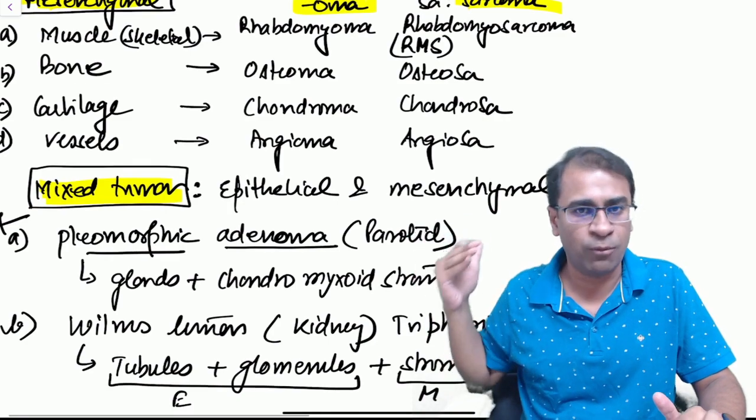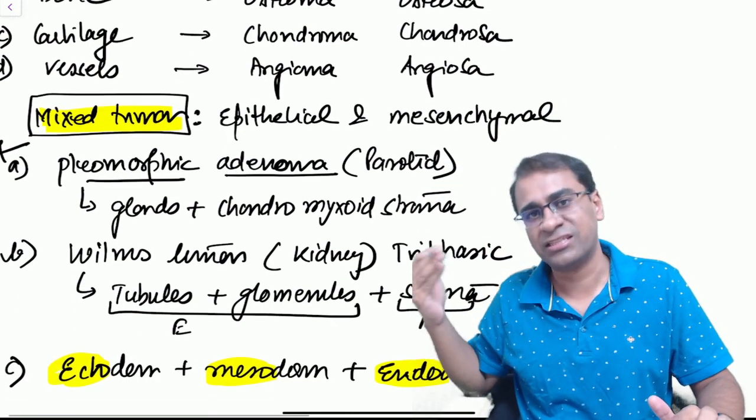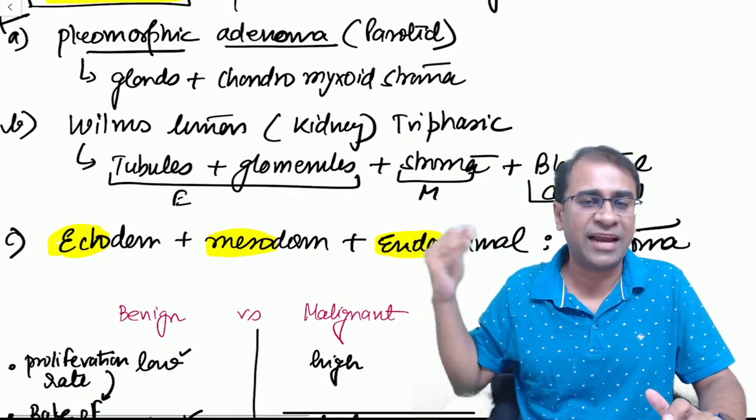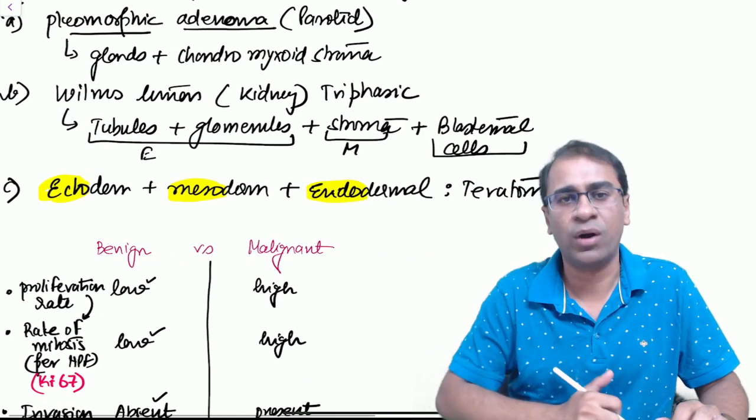Mixed tumors: for example a parotid will have a pleomorphic adenoma, Wilms tumor is a mixed tumor, and teratoma is a very good example of a mixed tumor.